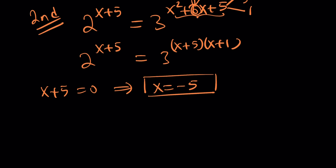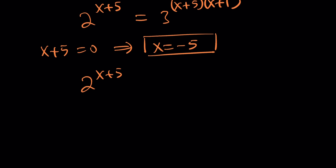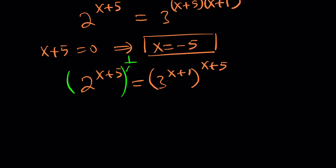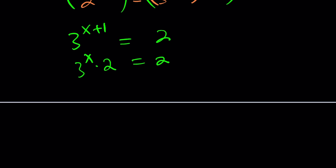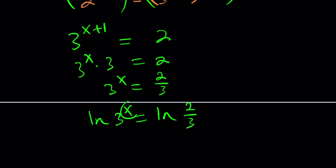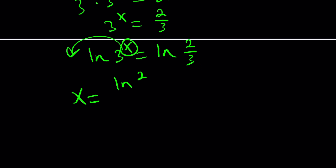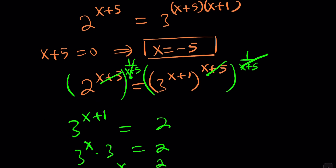To find the other solution, you cancel out x plus 5 by raising both sides to the power 1 over x plus 5, which is equivalent to simplifying — you cancel those exponents and end up with 3 to the power x plus 1 equals 2. Now you can write it as 3 to the x equals 2 over 3, then log both sides. Using ln, you get x equals ln of 2 thirds, divided by ln 3. So the two solutions are x equals negative 5 and x equals ln(2/3) divided by ln 3.